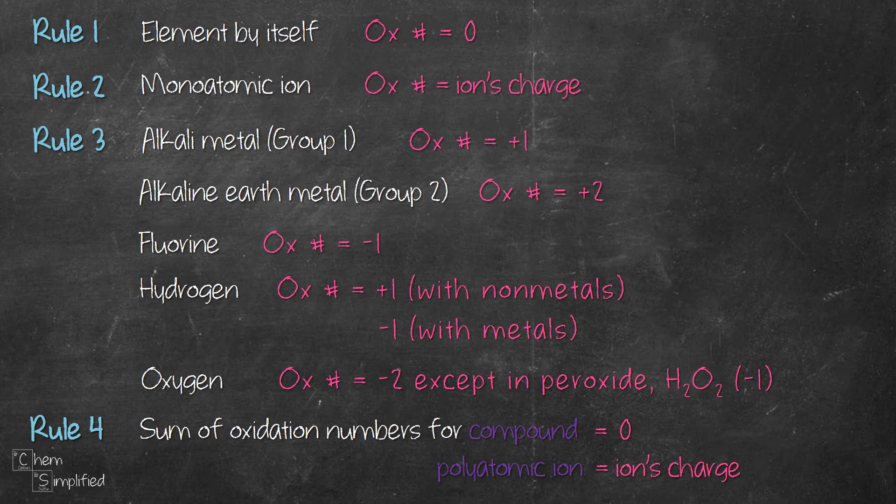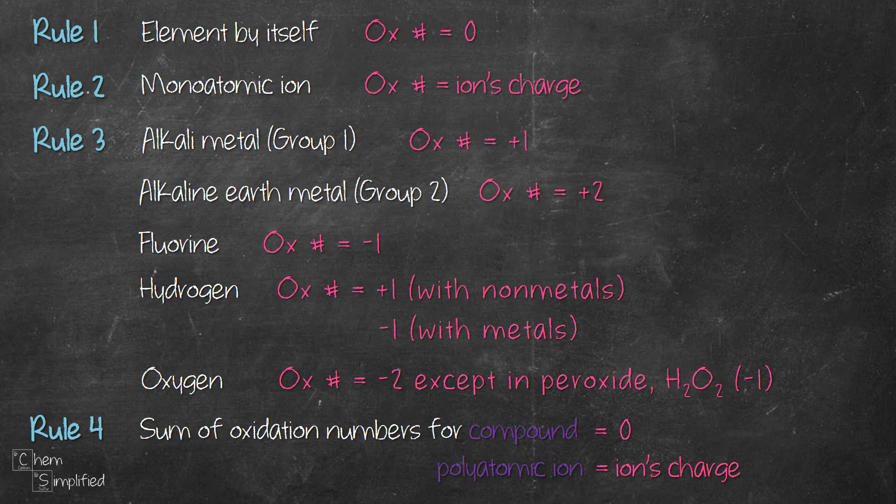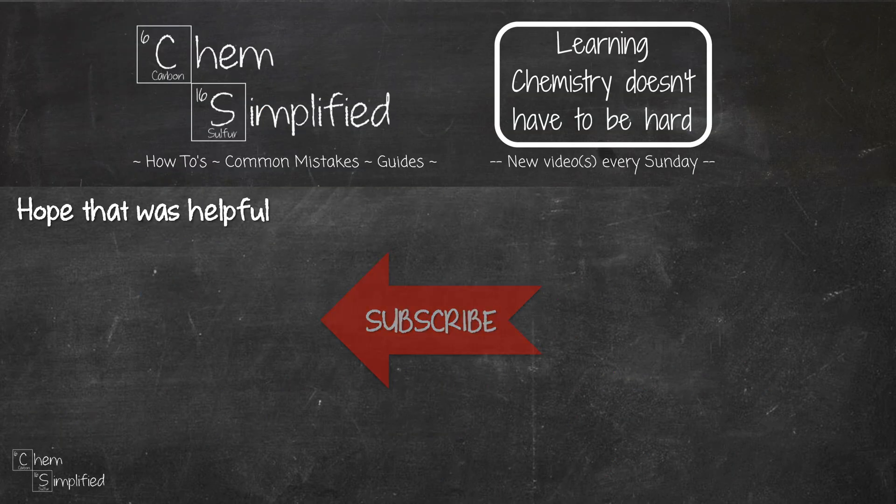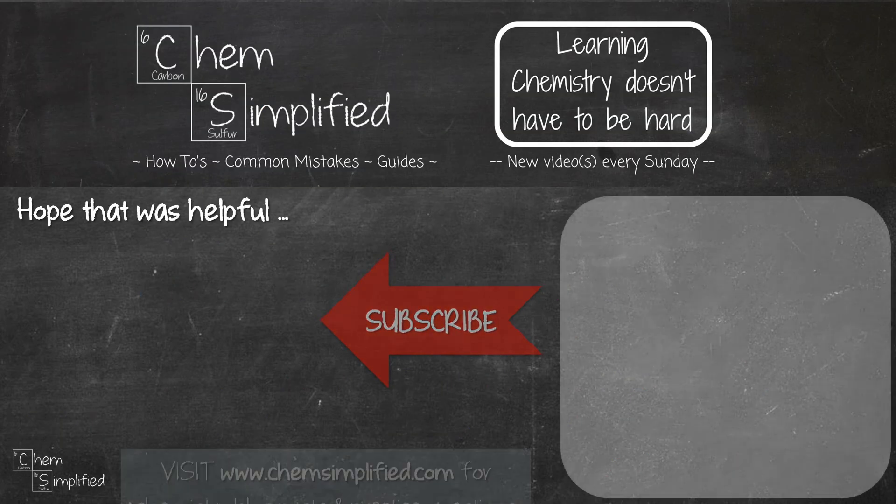With that, we're done going through the four rules to calculate oxidation number of any atom. If you're interested in seeing how to use these rules, do watch out for other videos on oxidation number. I'll place their links in the description box. I hope you find the four rules helpful. Do subscribe and thanks for watching.